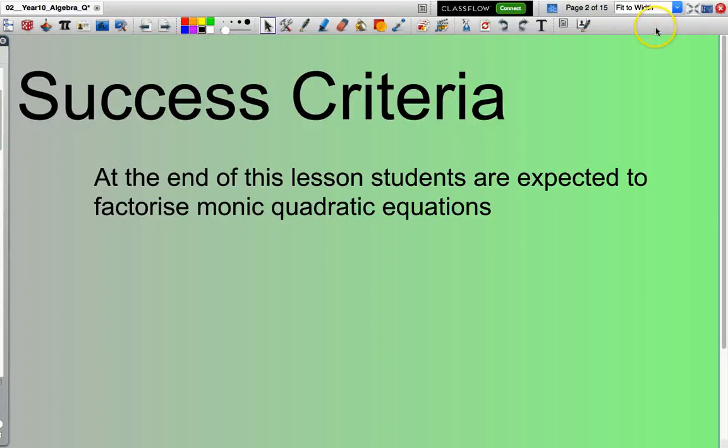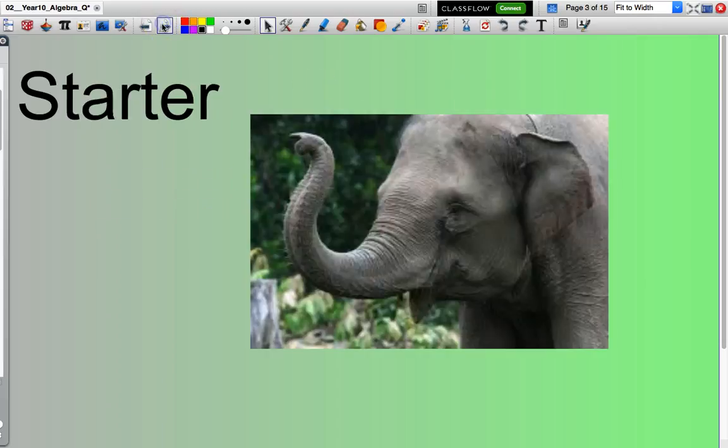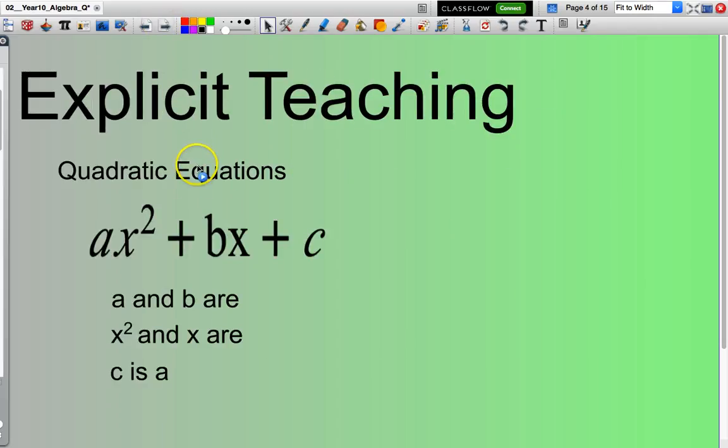Well hello and welcome. In this presentation we will be going through the process of factorizing monic quadratic equations. Quadratic equations basically have the form ax squared plus bx plus c. The particular values a and b are referred to as coefficients, the x squared and the x are called variables, and the c is called a constant.